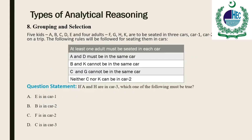Because grouping questions partition elements into sets, the number of elements is often an issue — as mentioned before, counting can be challenging. This tends to make grouping questions more difficult than ordering questions. Pay close attention to the maximum or minimum number of elements in a group, as this is often the heart of the question. Grouping questions can be classified as those that partition elements into two groups, and those that partition elements into three or more groups. The former is sometimes called selection questions because they select elements from a pool, dividing it into two groups: those selected and those not selected.